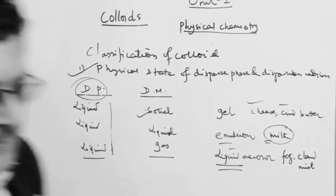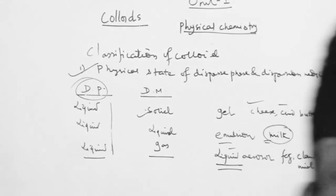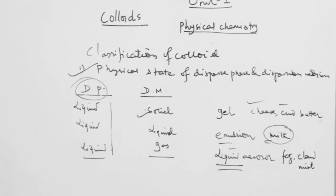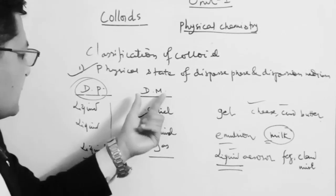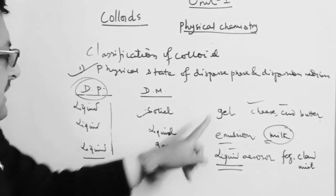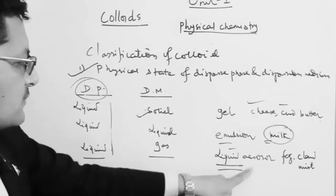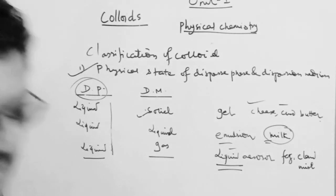So we can classify by physical state into solid, liquid, and gas. When dispersed phase is liquid, we have gel, emulsion, and liquid aerosol.